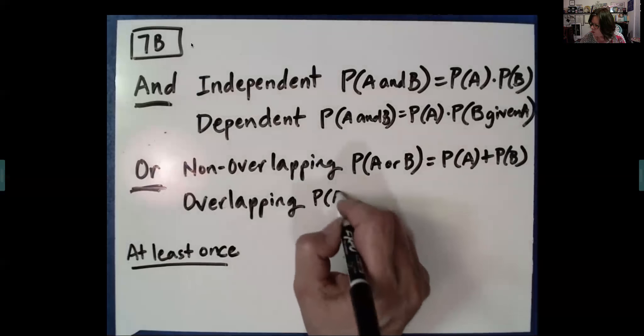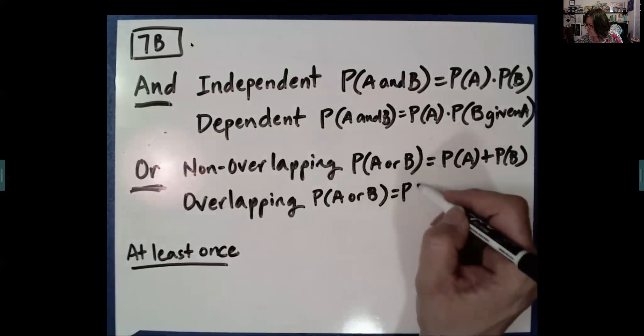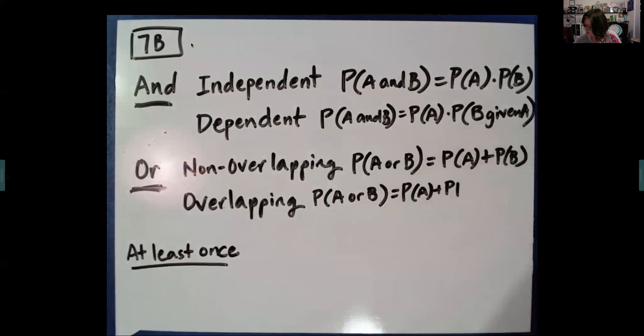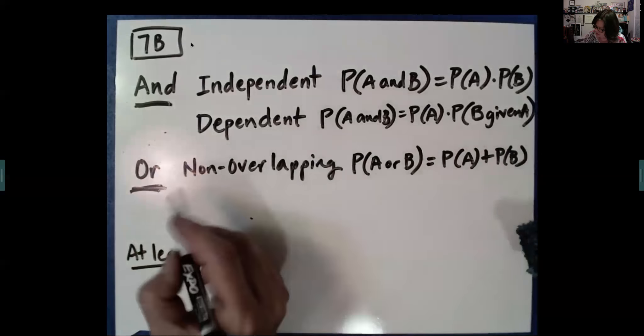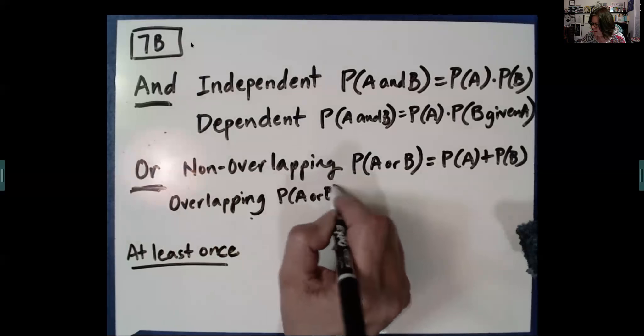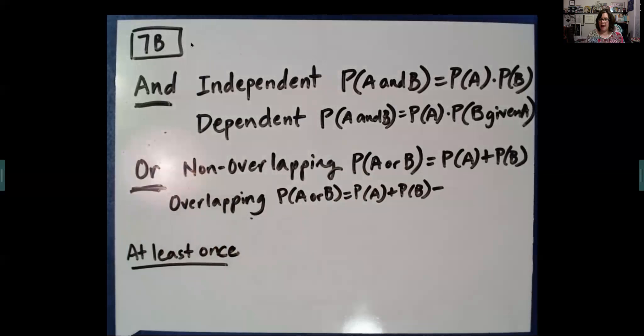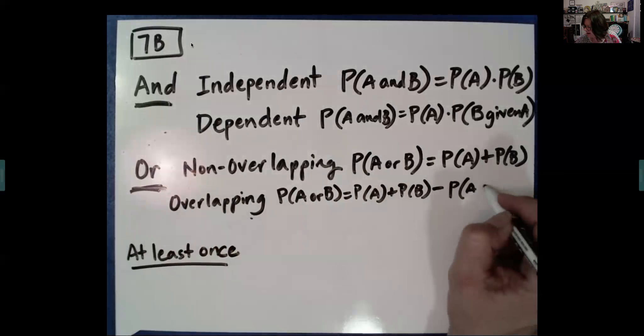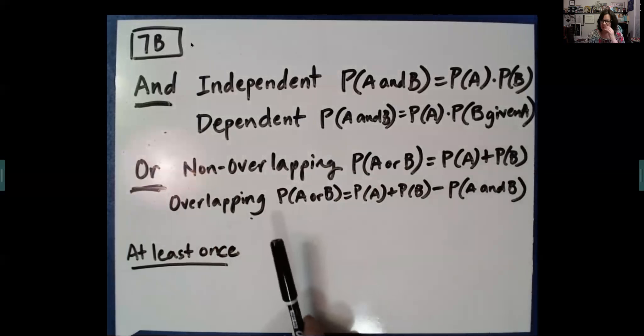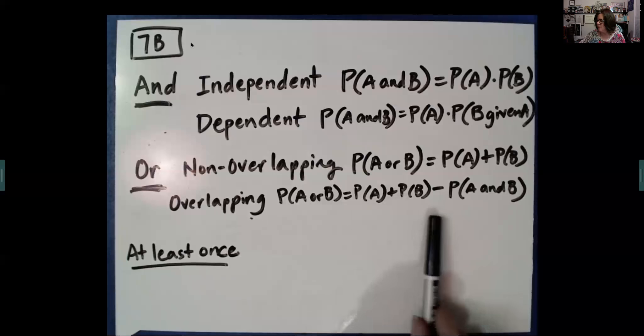Now, if they're overlapping, we don't want to count the events here and here twice. So, for the probability of A or B, probability of A plus the probability of B, that part's the same. But, we have to subtract the situations where they were counted twice in A and B. So, we subtract the probability of A and B. If this is, what's the probability that the card is red or a king? Well, probability that it's red, probability that it's a king, and then we subtract the probability that it's a red and a king because we don't want to count it twice.